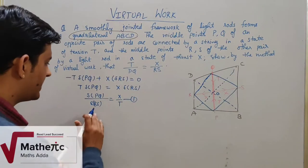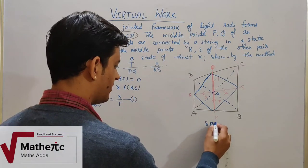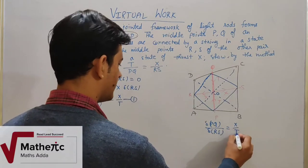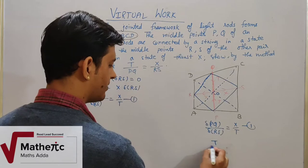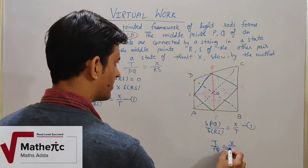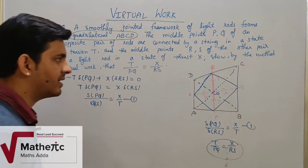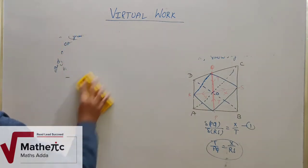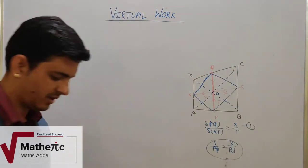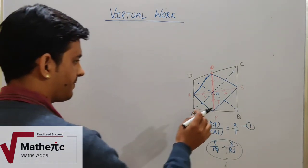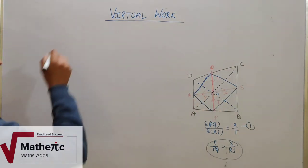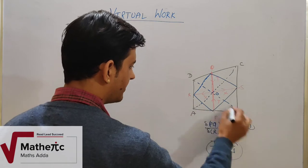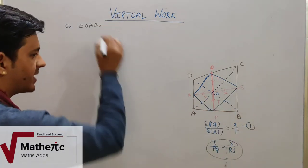So δ(PQ) upon δ(RS) equals X upon T — equation 1. The solution length is long so understand this carefully. If we talk about triangle OAB, P is the midpoint, so OP is a median.